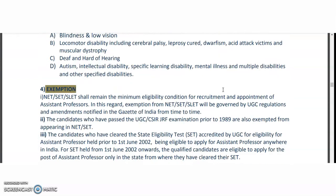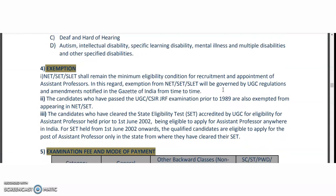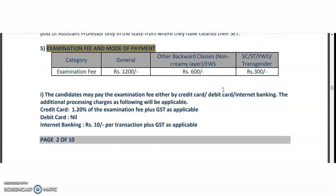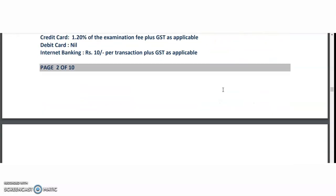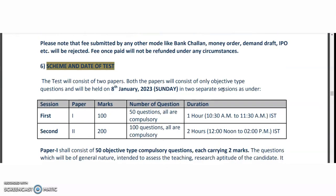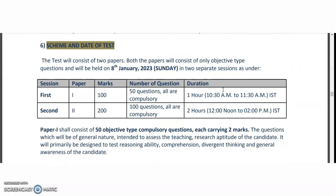Reservation policies are as per the Government of India norms. The examination fee is: general category — ₹1200; OBC category — ₹600; and SC/ST, PWD, and transgender category — ₹300.